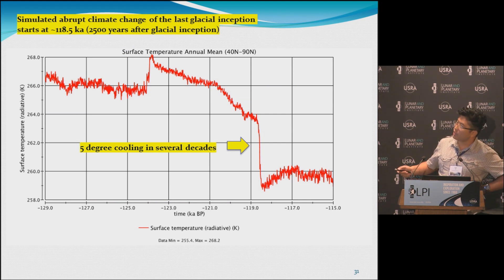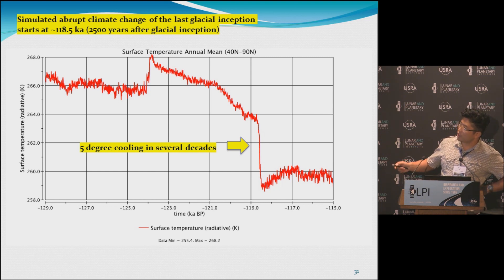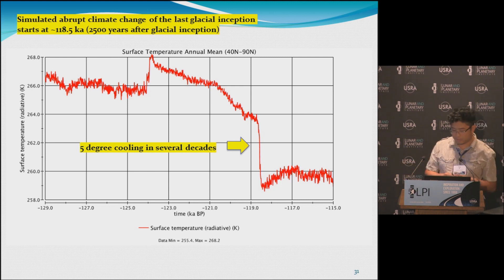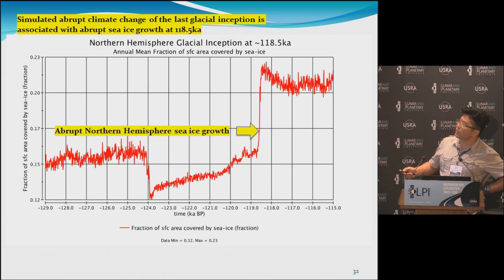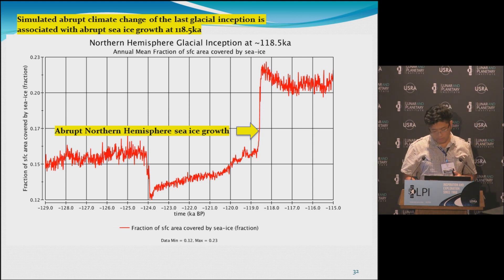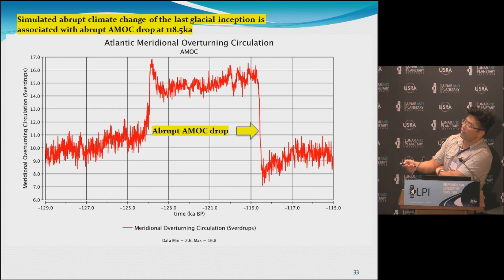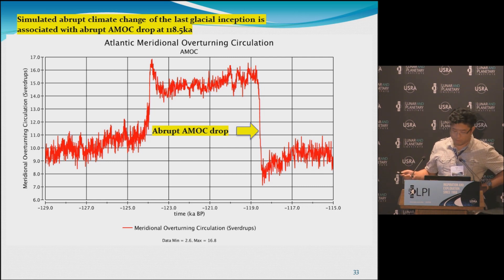Looking at the abrupt change: the northern hemisphere high-latitude temperature shows that the abrupt change during glacial inception actually lags by about 2,500 years, at about 118,500 years ago. Checking the sea ice, there is a dramatic increase of sea ice at 118,500 years ago. And checking the AMOC, the solar forcing alone actually produces a large drop in AMOC.